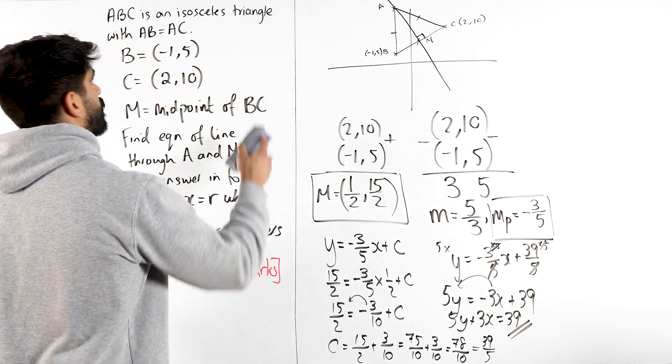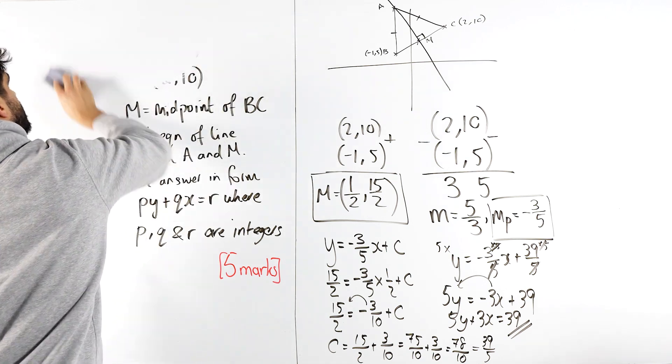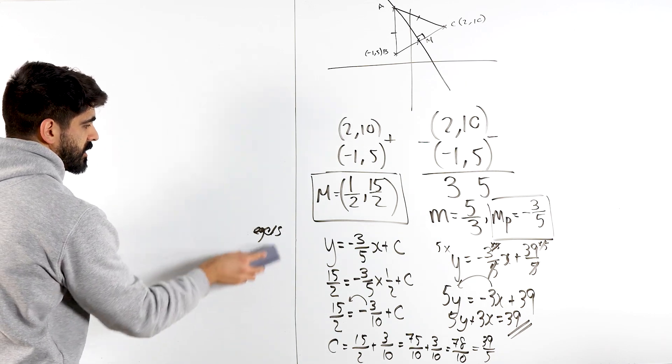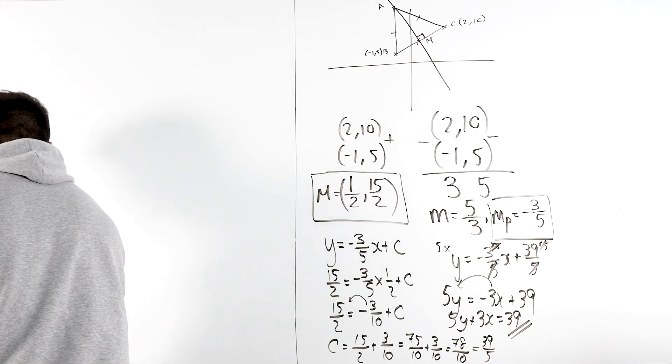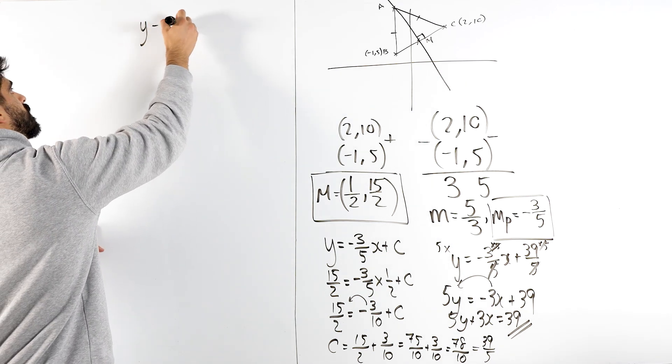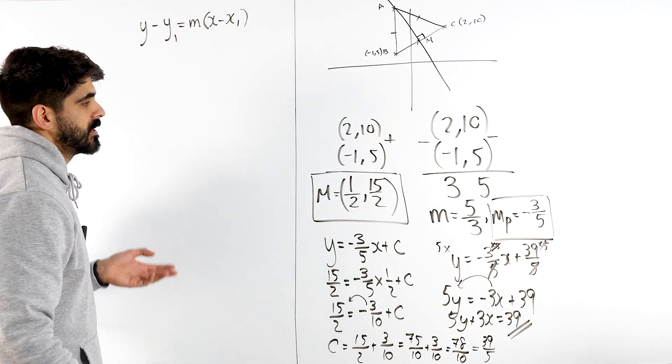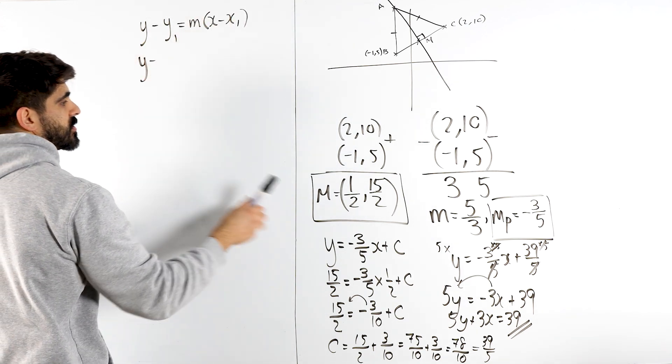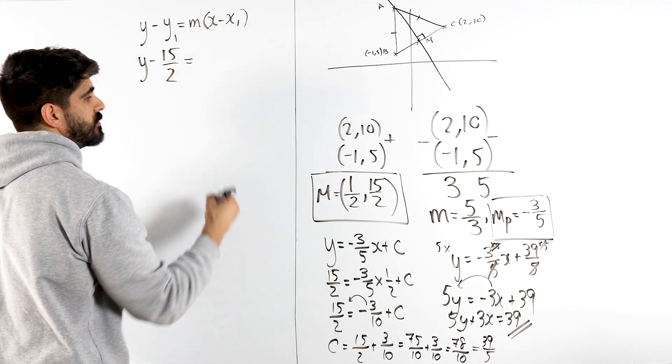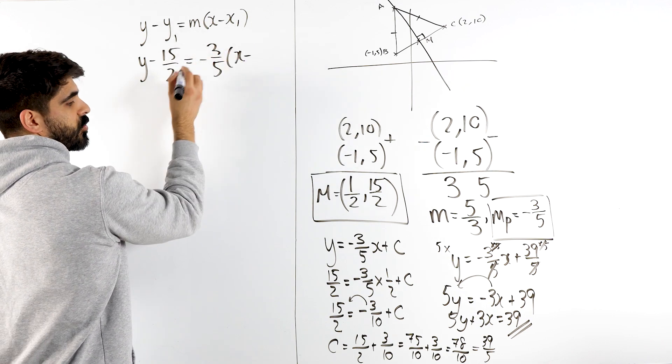Absolutely horrible. Let me show you guys how we could do this using the y minus y1 formula, which is so much cleaner. The y minus y1 formula, which is super easy to remember, says you do y minus the y coordinate is the gradient times x minus the x coordinate of any line. So in our case, we're going to do y minus the y coordinate, which is 15 over 2, is the gradient, which was minus 3 fifths, times x minus the x coordinate, which was a half.